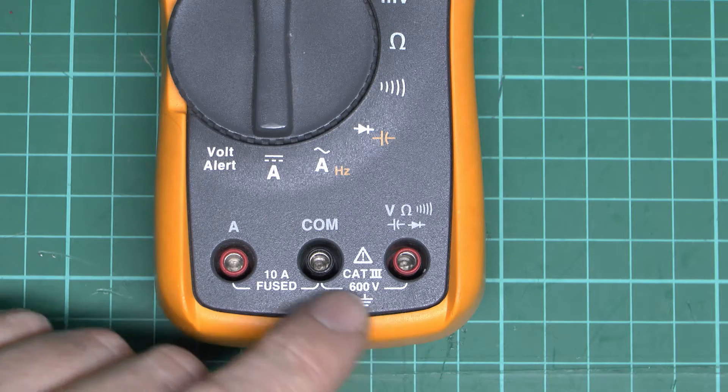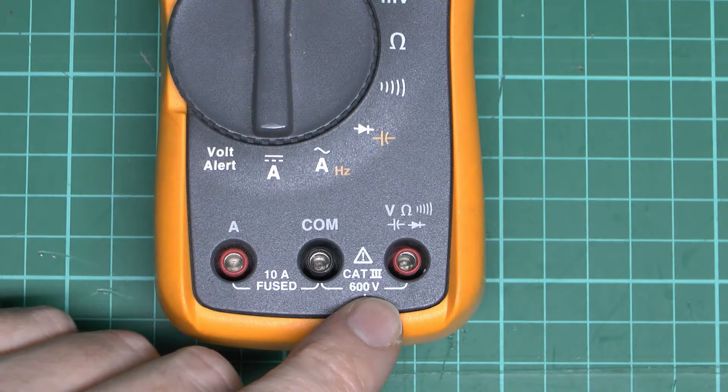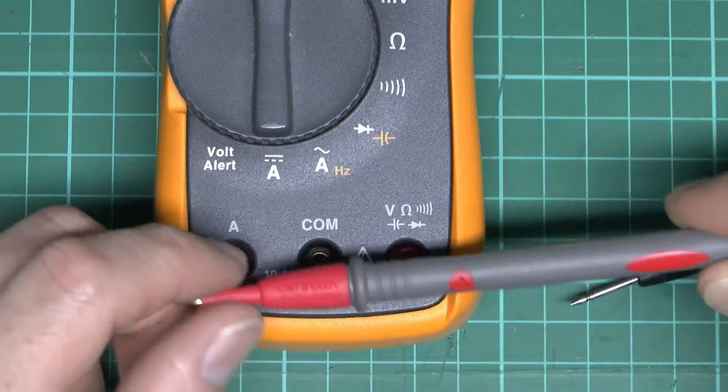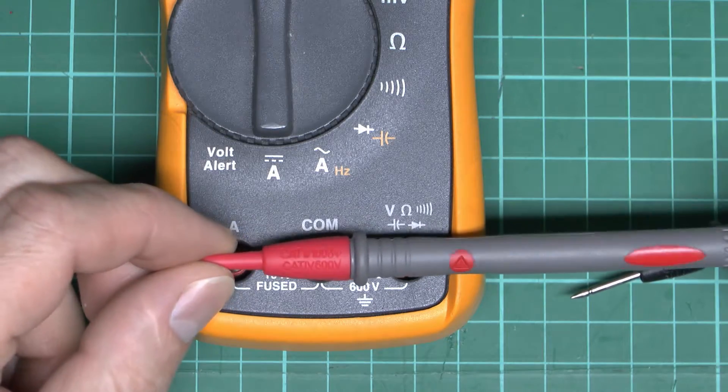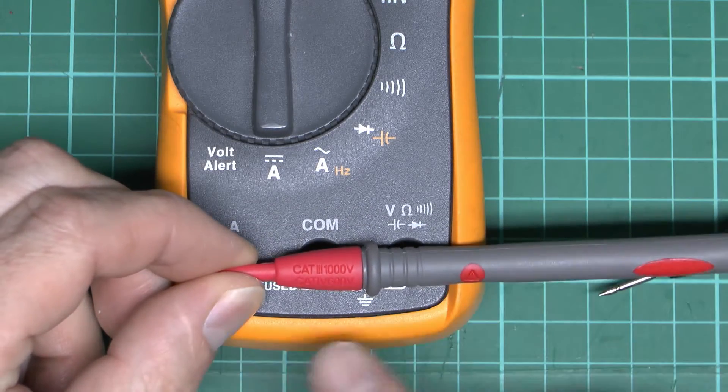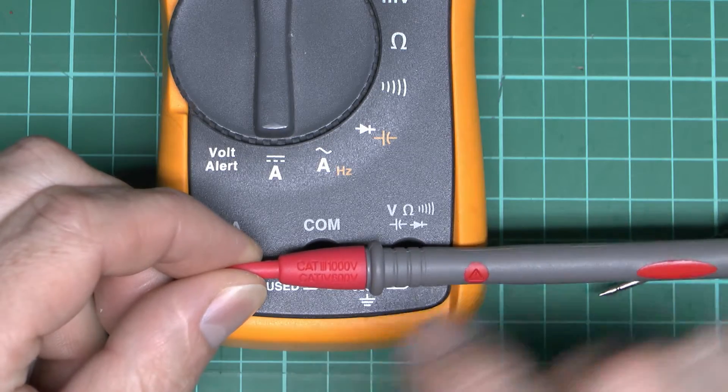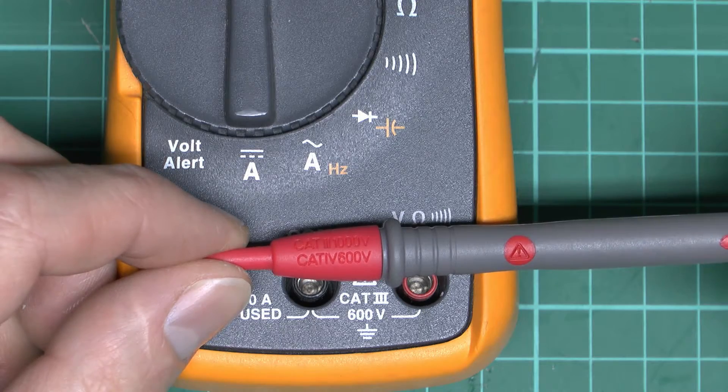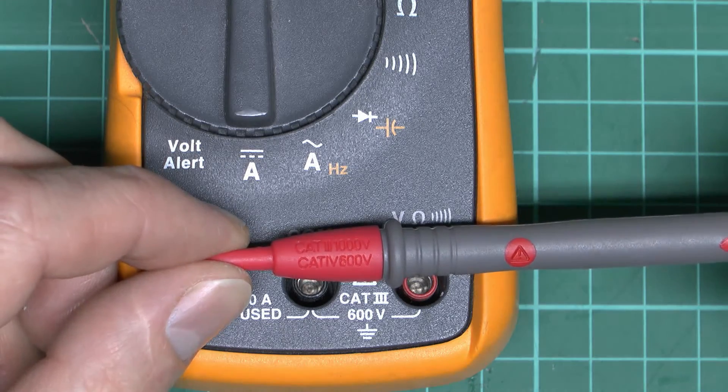And as well as the meter itself, or whatever measuring device you're using, it's also essential to make sure that the probes that you're plugging into this also have a similar rating on them. And here's an example of a probe here, and you see it's just printed on the end cap there. And you see this one is rated category 3 at 1,000V, and also category 4 at 600V.